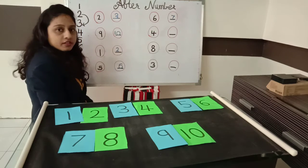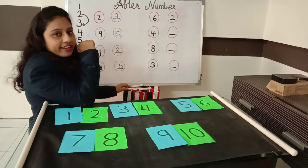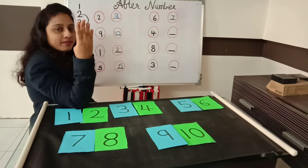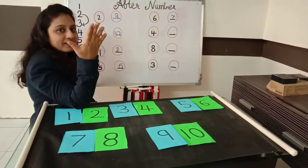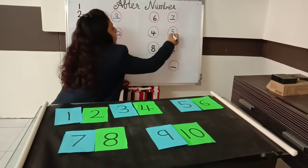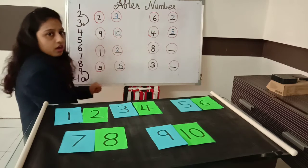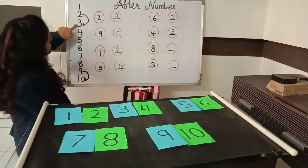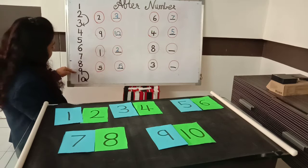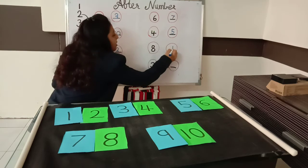Now which number is this? 4 number. What comes after 4? Let's count: 1, 2, 3, 4 — and yes, 5. So 4 after will be 5. Now see, which number is this? 8 number. So what comes after 8? Let's count: 1, 2, 3, 4, 5, 6, 7, and 8 — and after 8? 9. So we have to write 9.